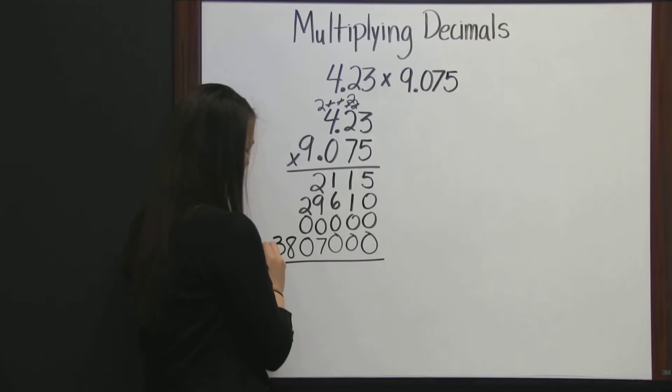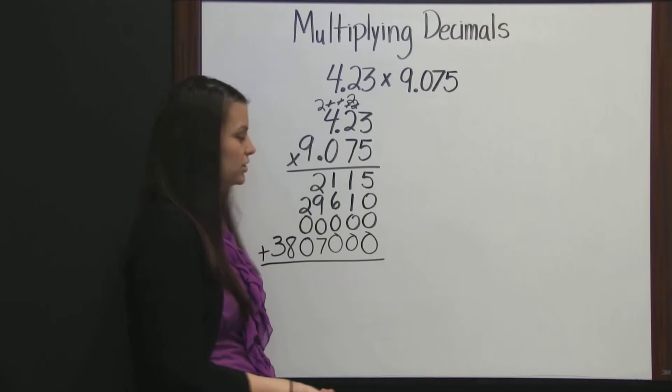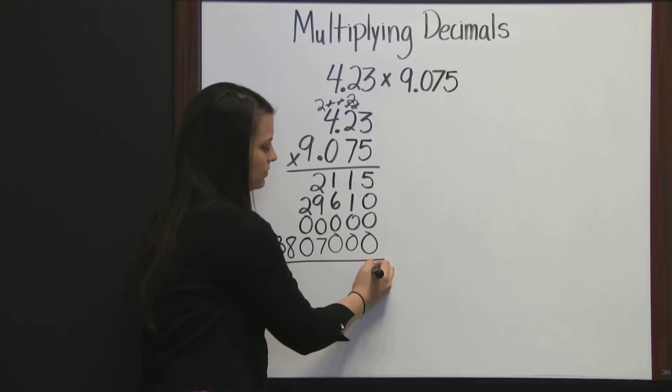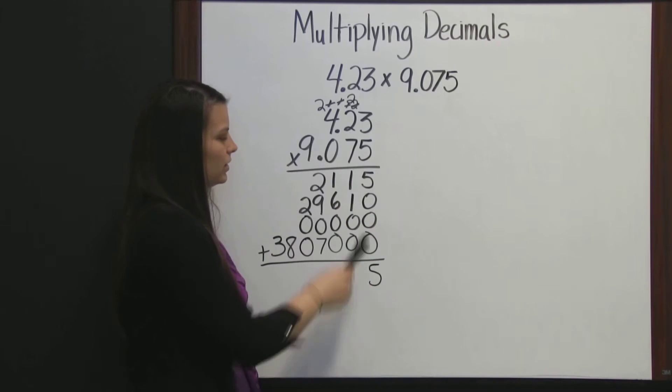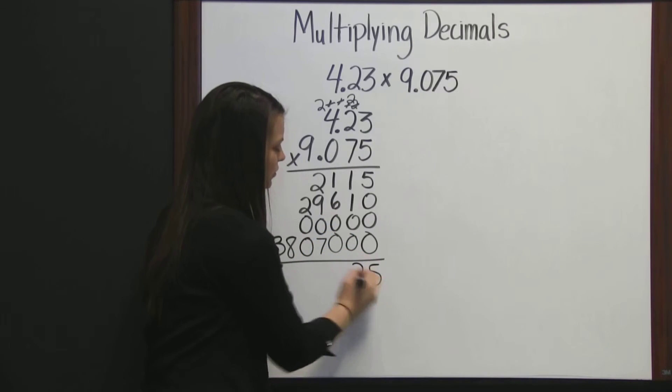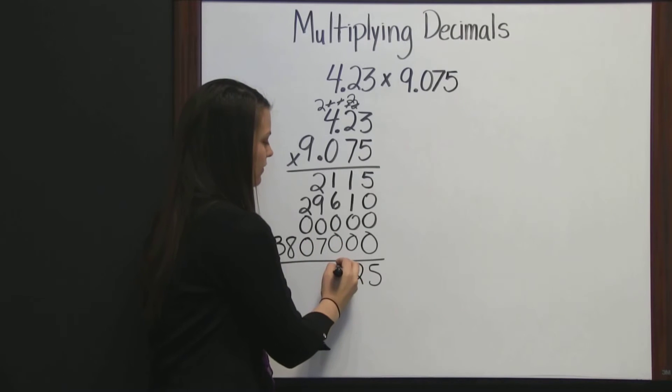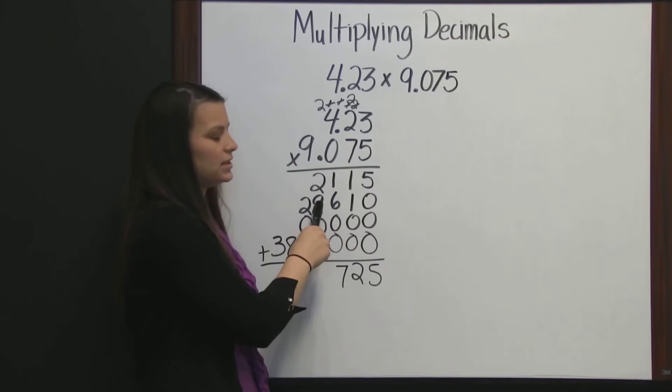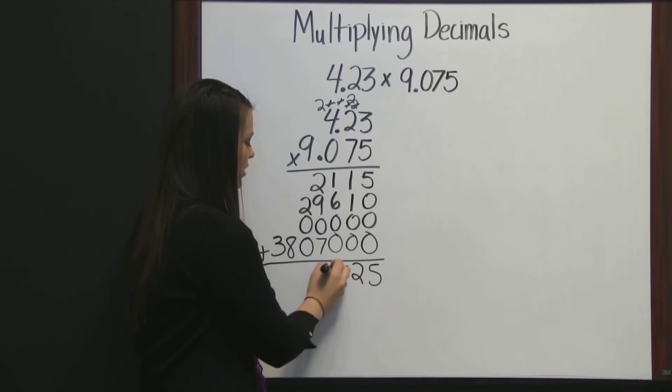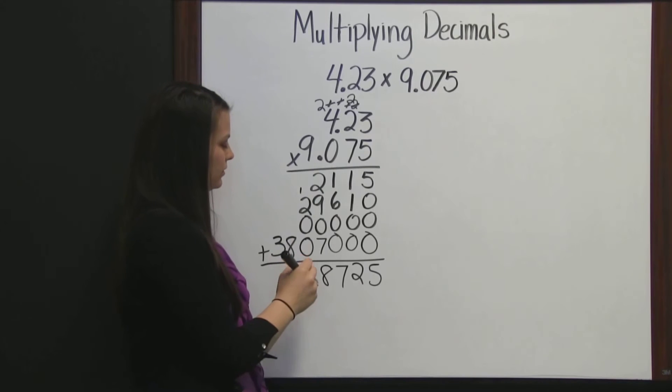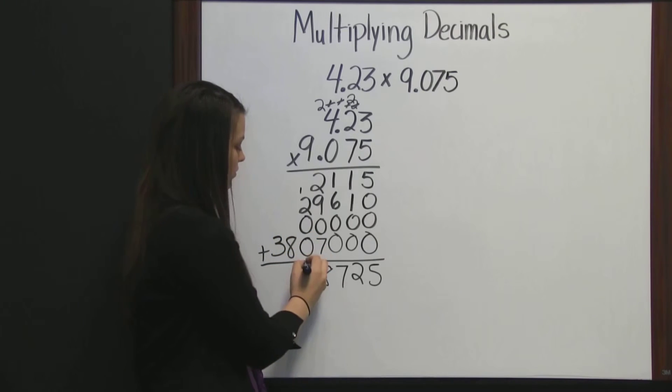Then, just like we would with any other whole numbers, we're going to add our results together. 5 plus all these zeros gives us 5. 1 plus 1 is 2. 1 plus 6 is 7. 2 plus 9 is 11, plus 7 is 18. Write our 8, carry our 1. 1 plus 2 is 3, and then we have 8 and our 3.